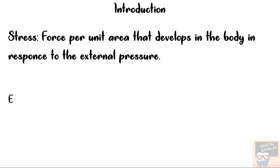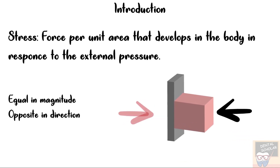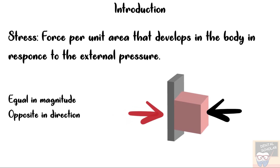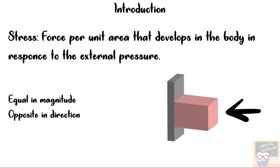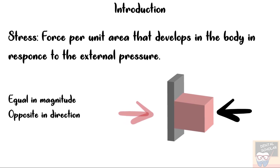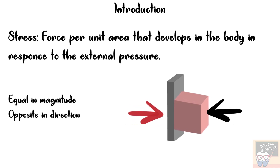Stress and pressure are equal in magnitude, and the force that develops in response to the pressure is opposite in direction, as you can see in the animation. The black arrow represents the applied force or pressure, and in response, a force develops in the object shown by the red arrow, directed opposite to the black arrow. Such a pair of forces — equal in magnitude but opposite in direction — is known as a couple.